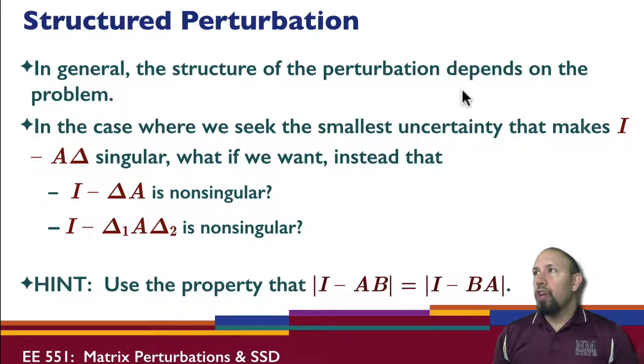In general, the structure of the perturbation depends on the problem that you're looking at. In the case where we seek the smallest uncertainty to make I minus A delta singular, what if instead we want I minus A to be non-singular? Or, perhaps we have two uncertainties, I minus delta 1 times A times delta 2. What if we want this to be non-singular?